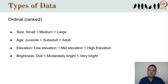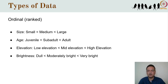Sometimes people denote ordinal data in numeric form — for example, labelling juveniles 1, sub-adults 2 and adults 3 — but you should be very careful to remember that these data are nevertheless not numeric, and do not possess all the properties of numbers that we usually take for granted.